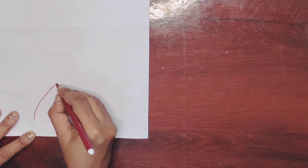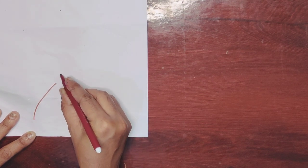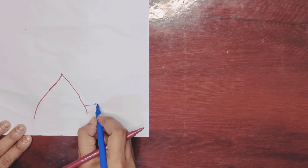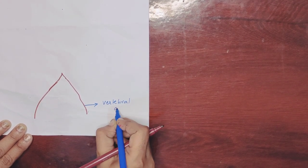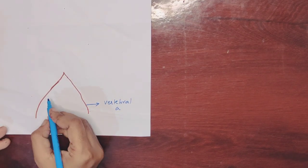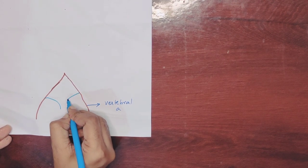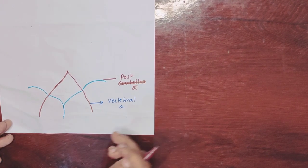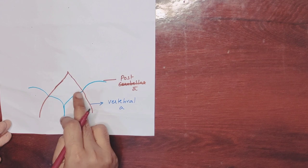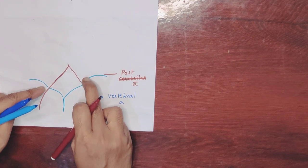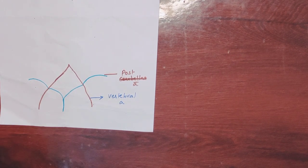The vertebral arteries form an inverted V-shape. In the vertebral artery, the most important thing is to form two arteries. The anterior side will be joined by one artery to form the anterior spinal artery. The posterior arteries will form the posterior spinal artery.